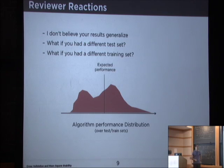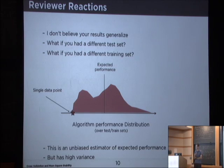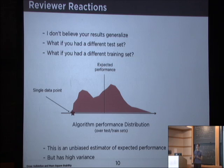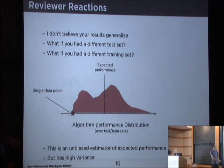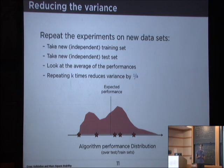More formally, what the reviewers are saying is that there's some distribution of the expected performance of your algorithm — sometimes it performs worse, sometimes better. What you gave them is a single data point sampled from this distribution. Maybe it's a uniform random sample point, but probably not because of selection bias — if your results were awful, you wouldn't have sent them in. So you gave a single data point from this distribution; it's an unbiased estimator of the mean, but with absurdly high variance. To reduce the variance, let's take k different samples: a new training set and a new test set. Repeating k times reduces variance by a factor of 1 over k.